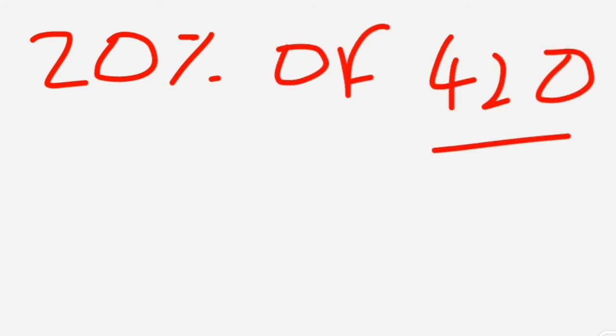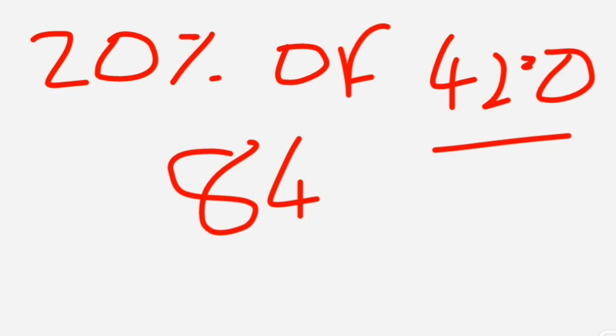For 20 percent of 420: 10 percent of 420 is 42 (move decimal point). Then 20 percent is simply 42 into 2, which equals 84. So 20 percent of 420 is 84.